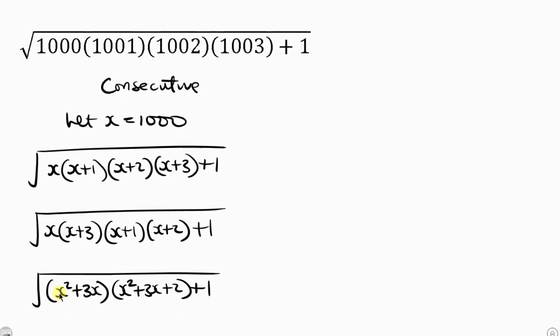Now notice that from this first bracket, we have x squared plus 3x. And from this second bracket, we also have x squared plus 3x. So we can therefore say that let x squared plus 3x be equal to p.